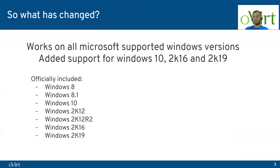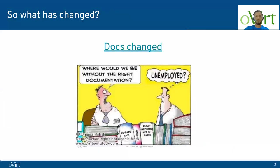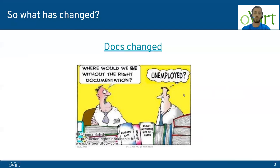This support for Windows 10, 2K16, and 2K19 is something that hadn't existed officially before OVIRT 4.4. And of course, if things have changed, the docs have changed as well. We updated the docs, and I provided here a link to the updated documents for installing the Windows Virtual Machines.